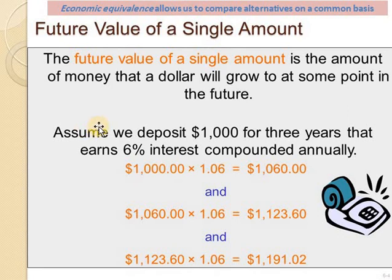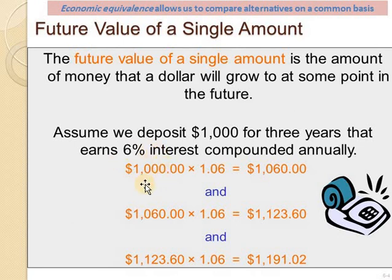Let's begin with the first example. Suppose we deposited $1,000 for three years and earn 6% interest compounded annually. What will be the value by the end of the first year? Starting with $1,000 and multiplying by the 6% interest rate, by the end of the first year I have $1,060 in my bank account.